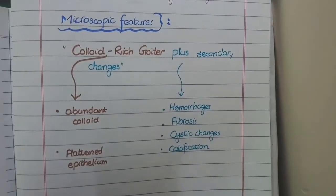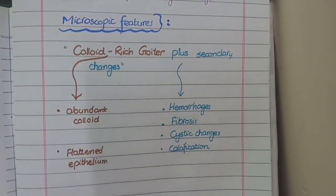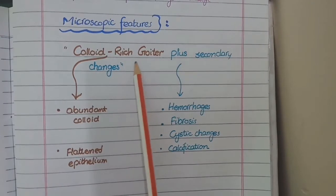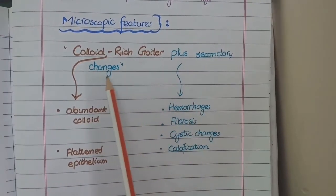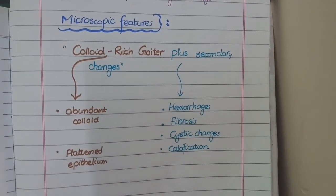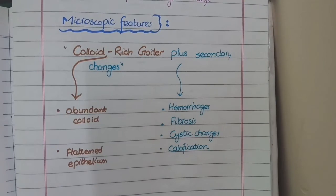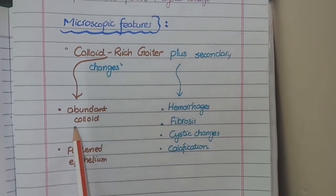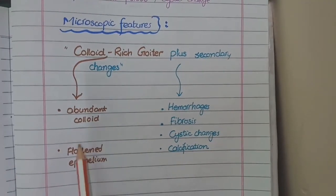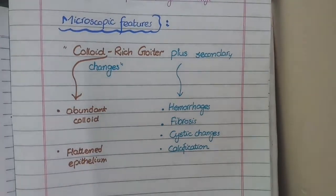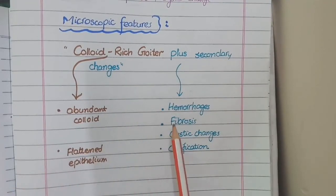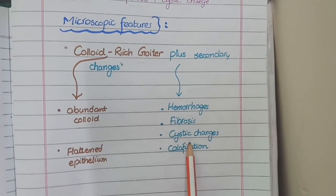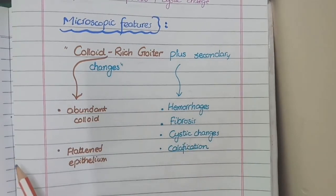For the microscopic features of multinodular goiter, the keywords to remember are: colloid-rich goiter plus secondary changes. Colloid-rich goiter means there will be abundant colloid with flattened epithelium. The secondary changes mean there will be development of hemorrhages, fibrosis, calcification, and cystic changes, as discussed in the gross features.